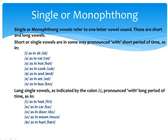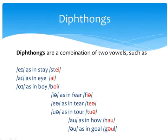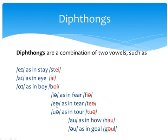Diphthongs are a combination of two vowels. For example, /eɪ/ as in 'stay', /aɪ/ as in 'I', /ɔɪ/ as in 'boy', /ɪə/ as in 'fear', /eə/ as in 'tear', /ʊə/ as in 'tour', /aʊ/ as in 'how', and /əʊ/ as in 'go'. These are the main diphthongs of English Received Pronunciation.